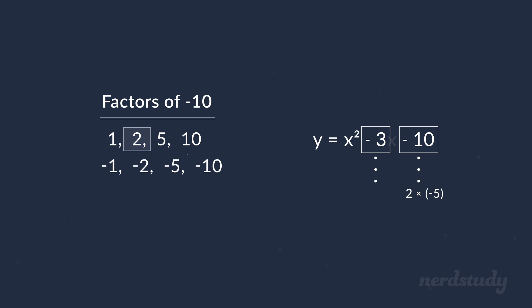if we try 2 and negative 5 instead, we would get negative 10 when multiplied, and negative 3 when added. And there we go. So it looks like these are our factors, and our answer would be y equals x plus 2 times x minus 5.